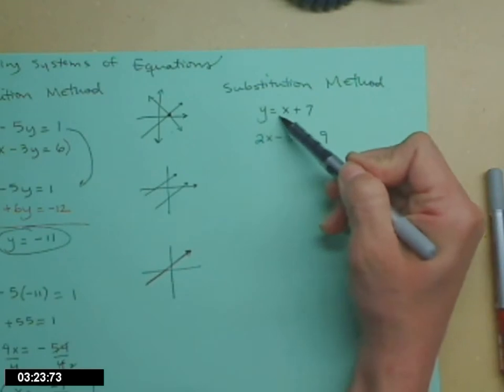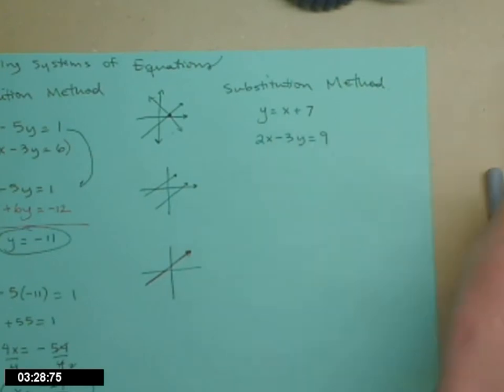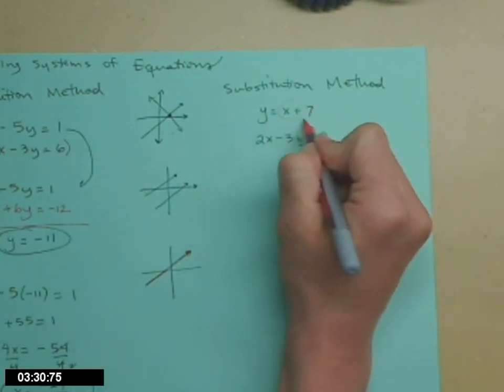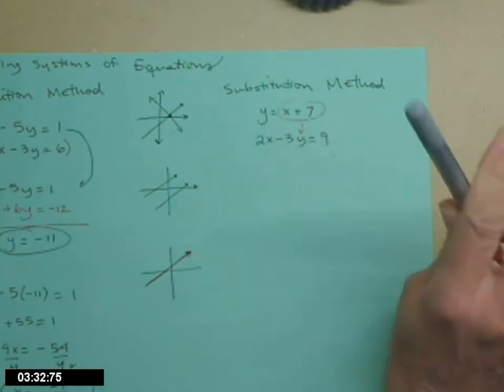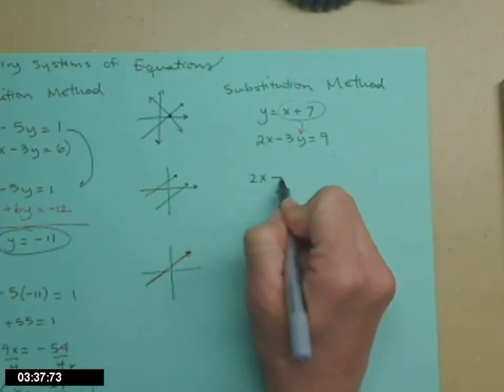So if y equals x plus 7, then in my second equation, I can replace this y here with the x plus 7.